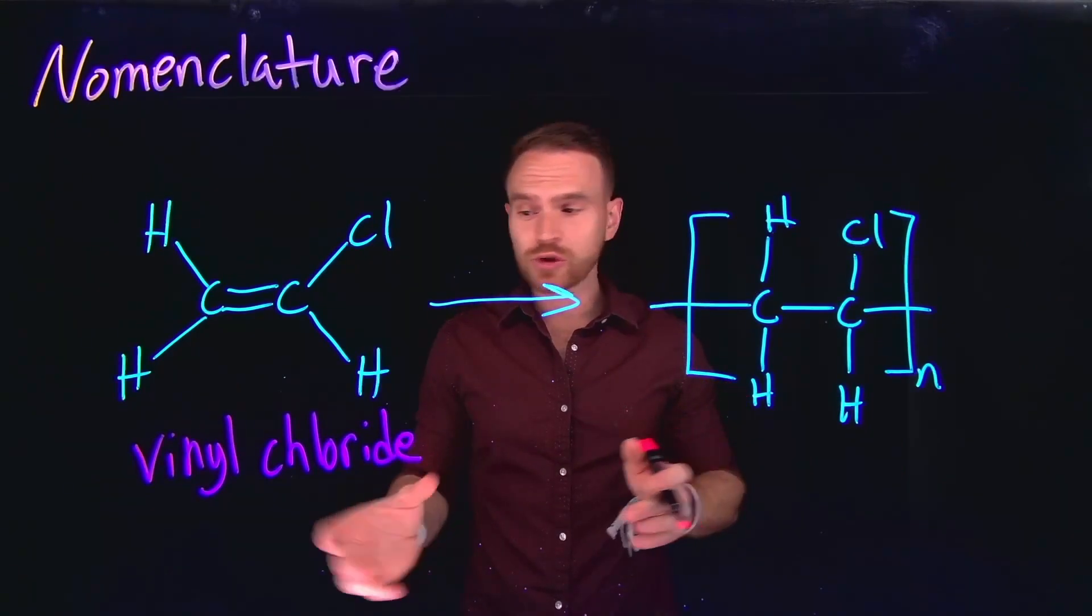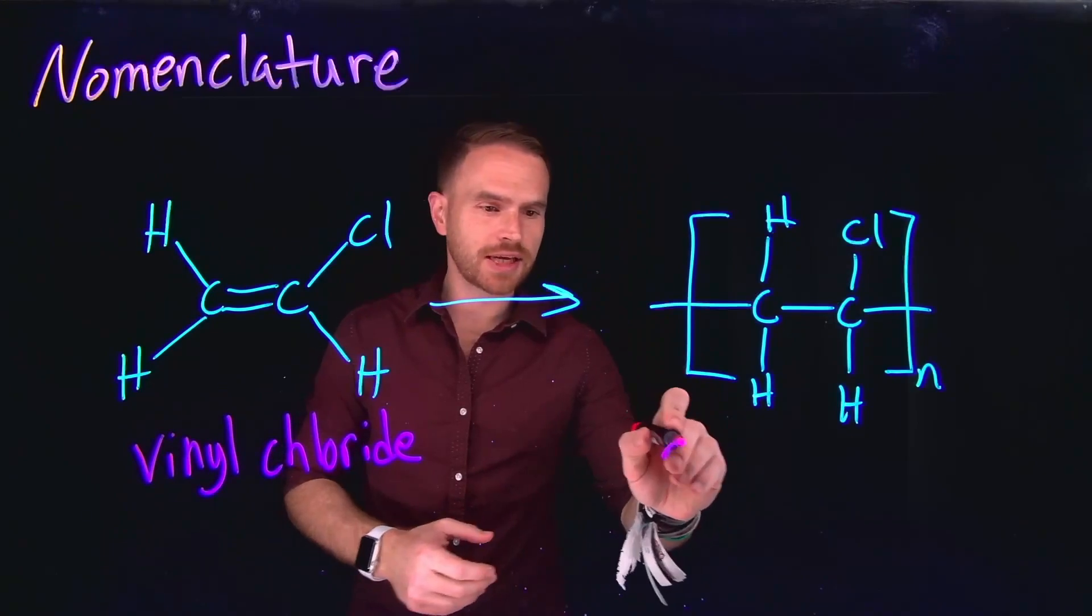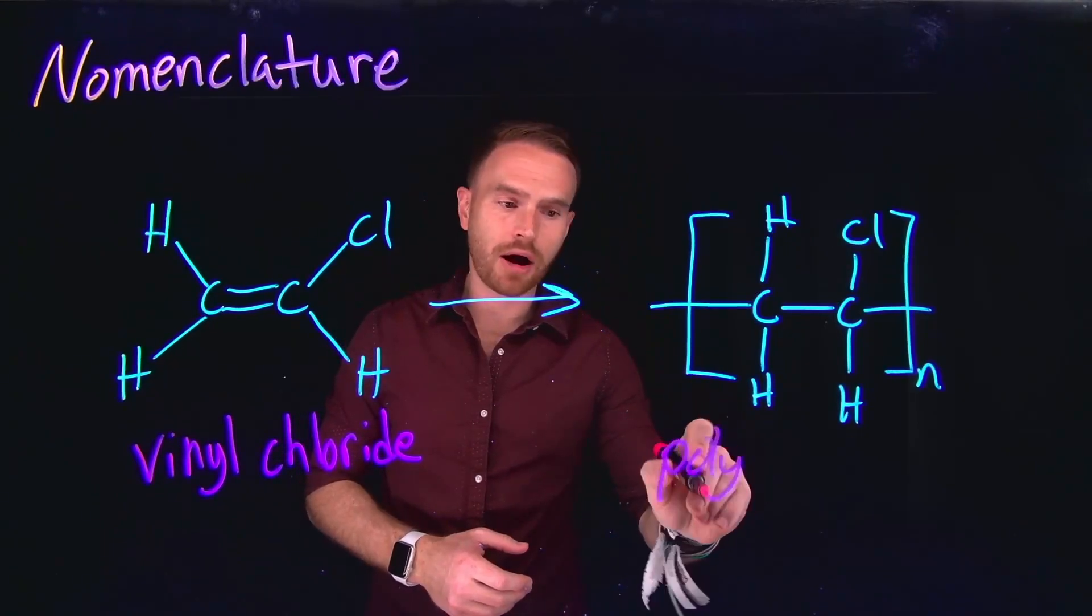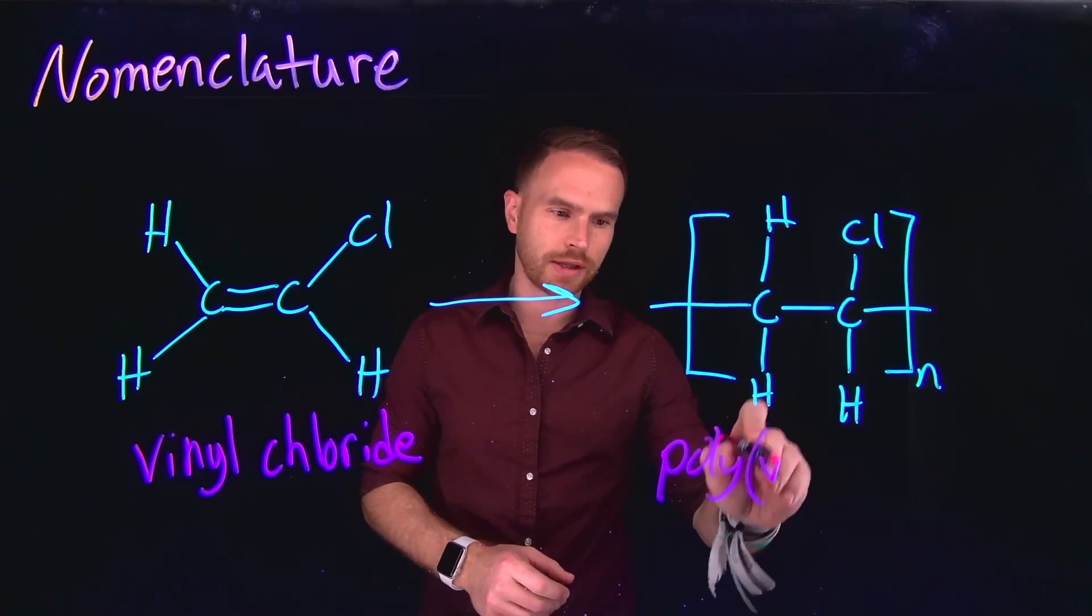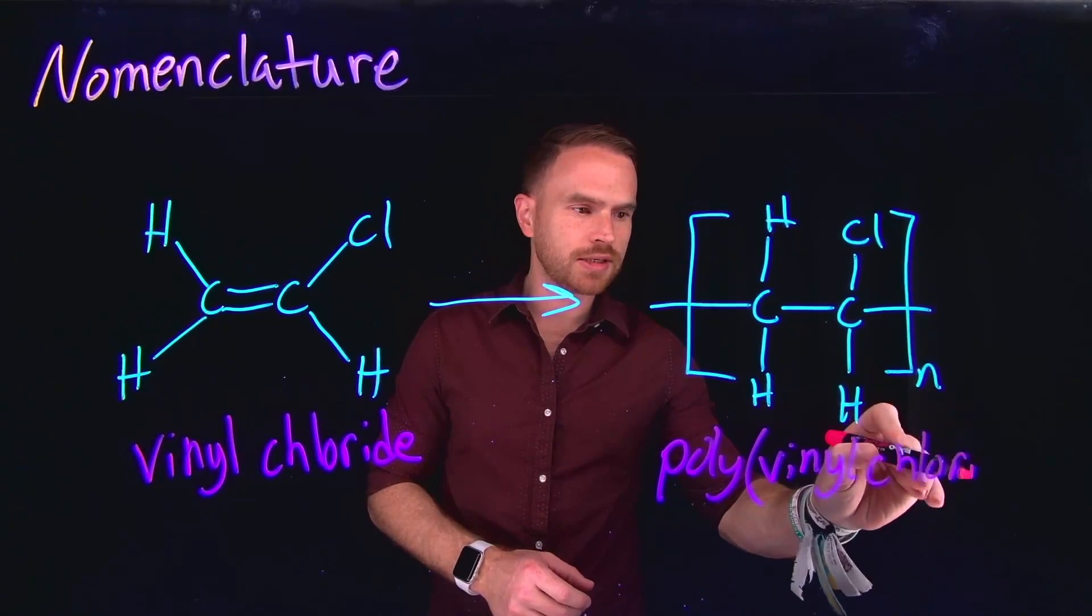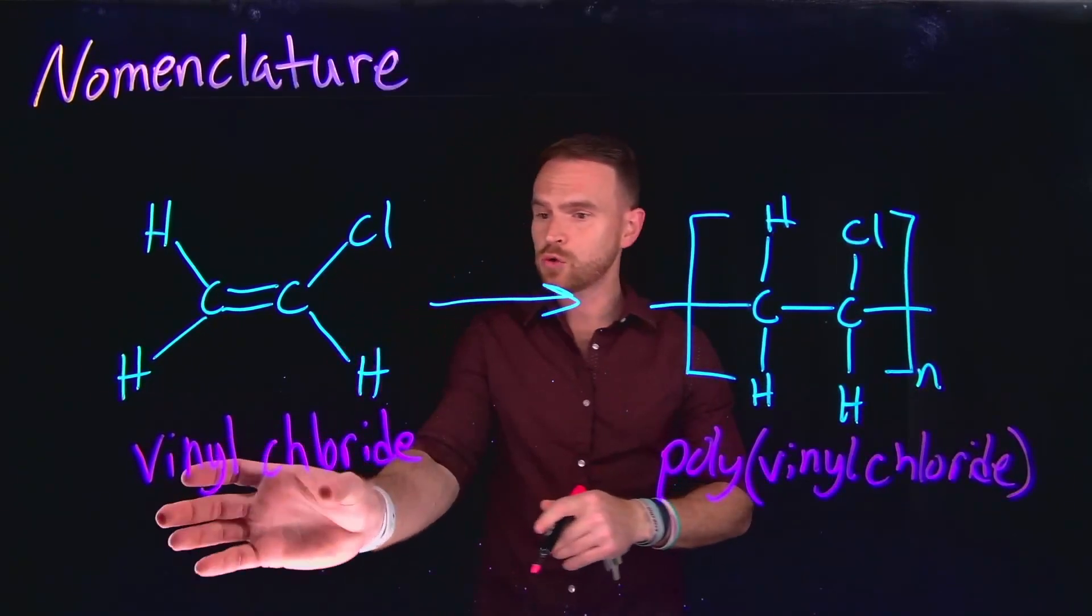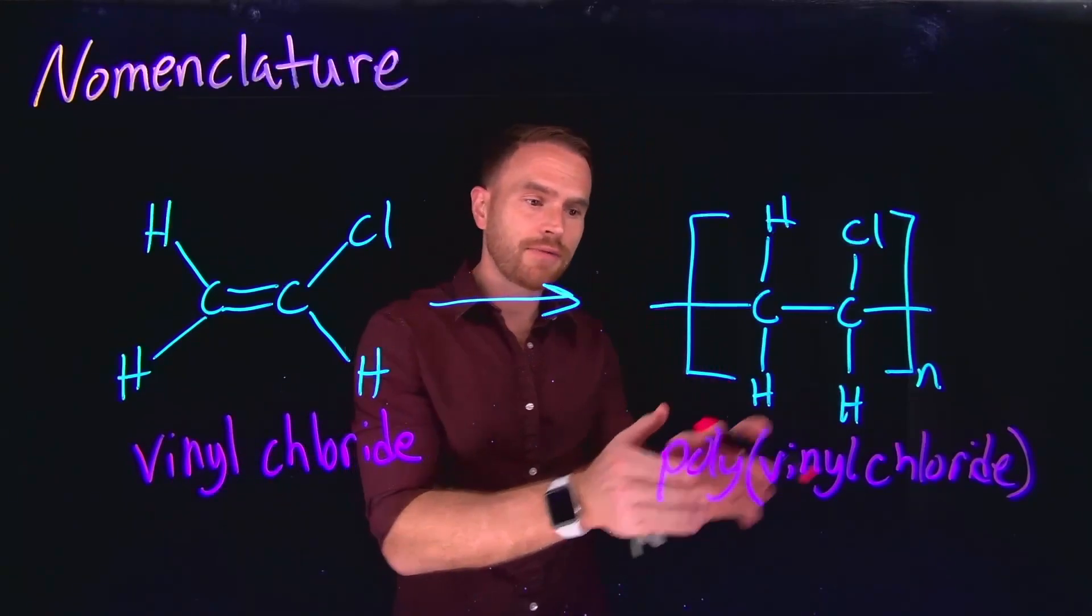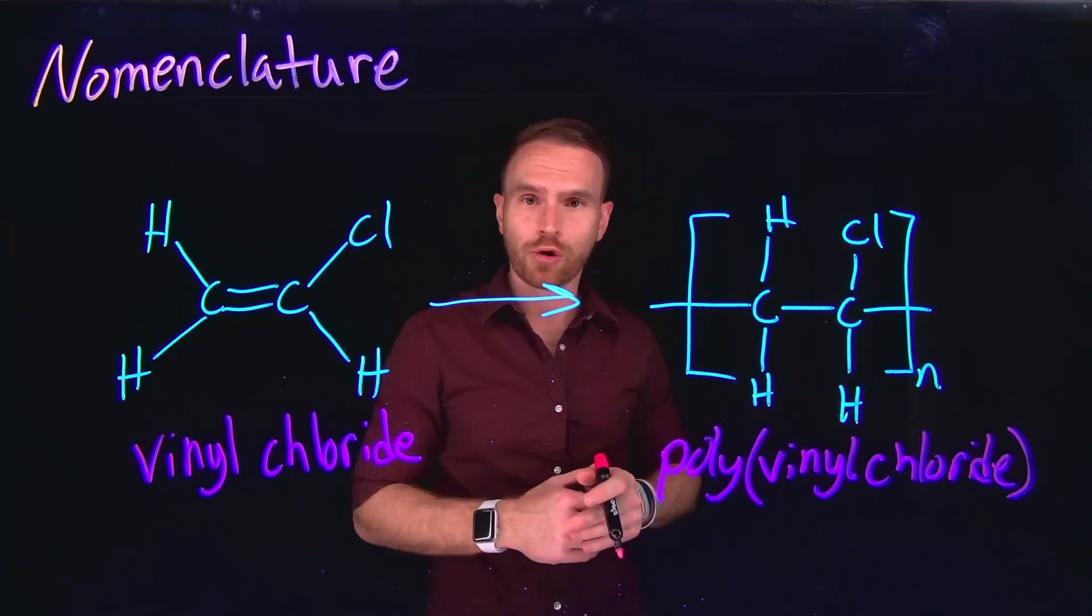When naming a polymer whose monomer contains two words like vinyl chloride, we change things up a little bit by still writing poly. However, the name of the monomer goes in parentheses following that. So this would be polyvinyl chloride, which is a commonly used polymer for water pipes. So again, two words for the monomer. We place poly followed by the two words in parentheses for polyvinyl chloride.